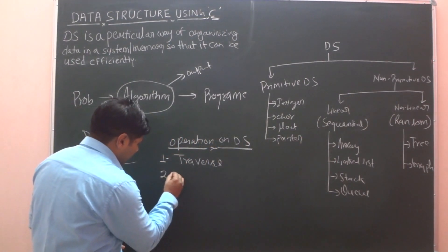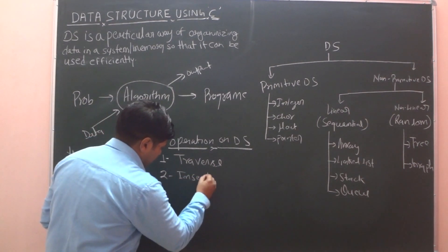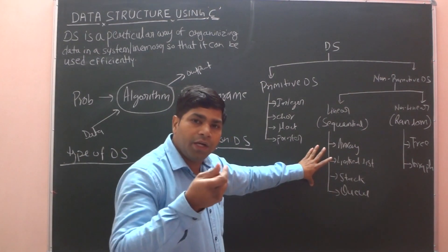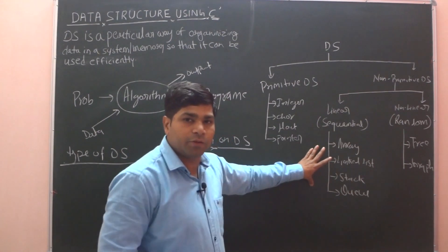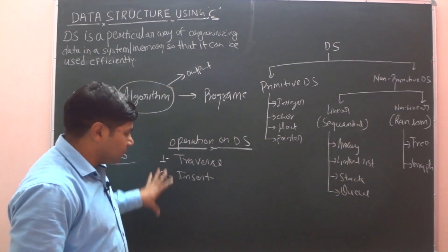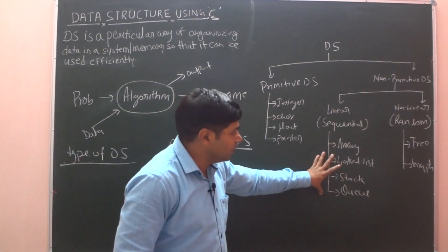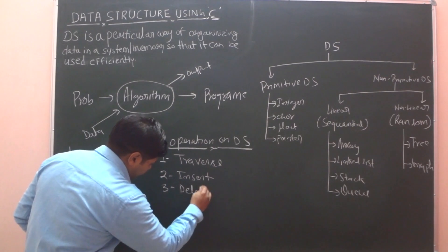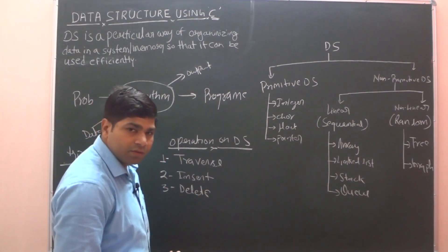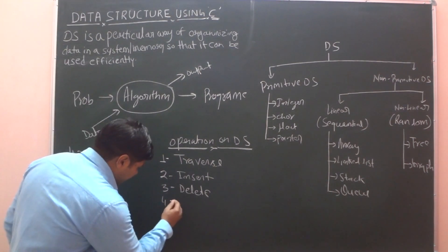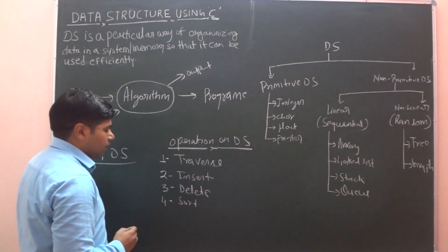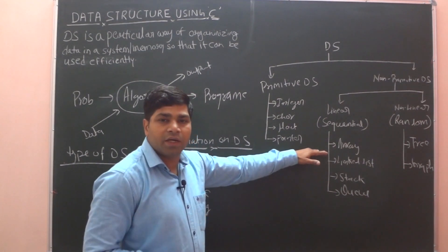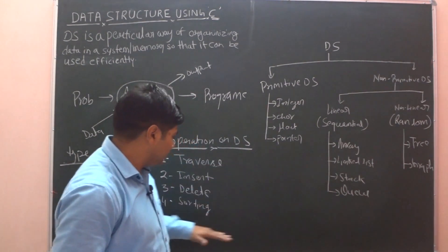Next is insert. What is the meaning of insert? In all data structures, what will we do? We will insert data — means we will store data. That is called insert. Next is delete — means to delete data from any data structure. Next is sort. What is the meaning of sort or sorting? It means we have to arrange data in ascending and descending order. That is called sort.